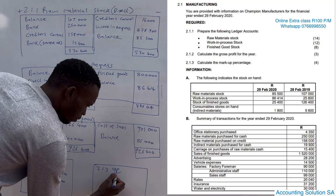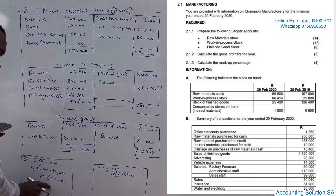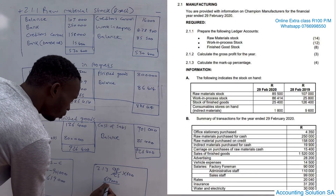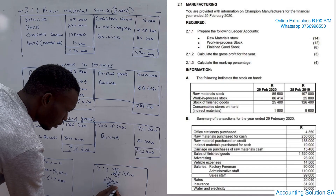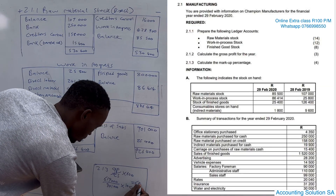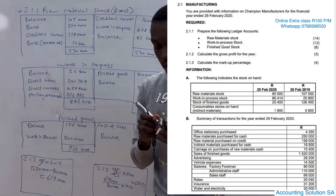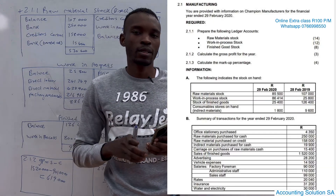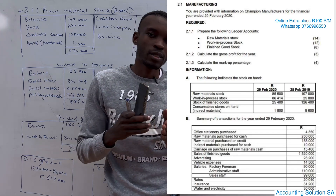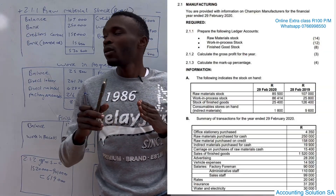The last one: we have to calculate markup. The formula for markup is gross profit divided by cost of sales multiplied by 100. It's a follow-up question - if you don't get cost of sales right you won't get this right. So 619,000 divided by cost of sales of 901,000 multiplied by 100 gives a markup of 68.7%. That's how you calculate this question. Those who want to buy extra classes, make sure that you do so as soon as possible so we can assist you - students attend twice every week for only R100.